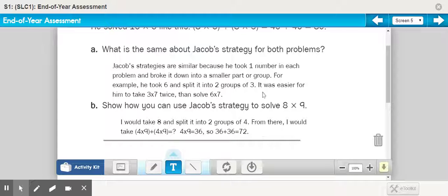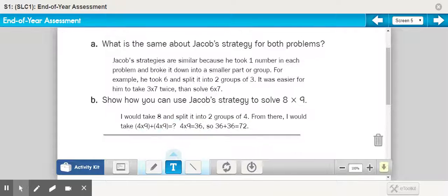At this point in the year, most of you would be able to probably come up with the product of 8 × 9, and that is 72 on your own. But it's not just testing your knowledge of how to solve this. It is also seeing if you can understand this strategy and describe it in your own words. And so, yes, you may already know the answer to this, but how did Jacob solve this? And so as you work on 5a and b, really focus in on what is Jacob doing to make this problem easier for him and why.